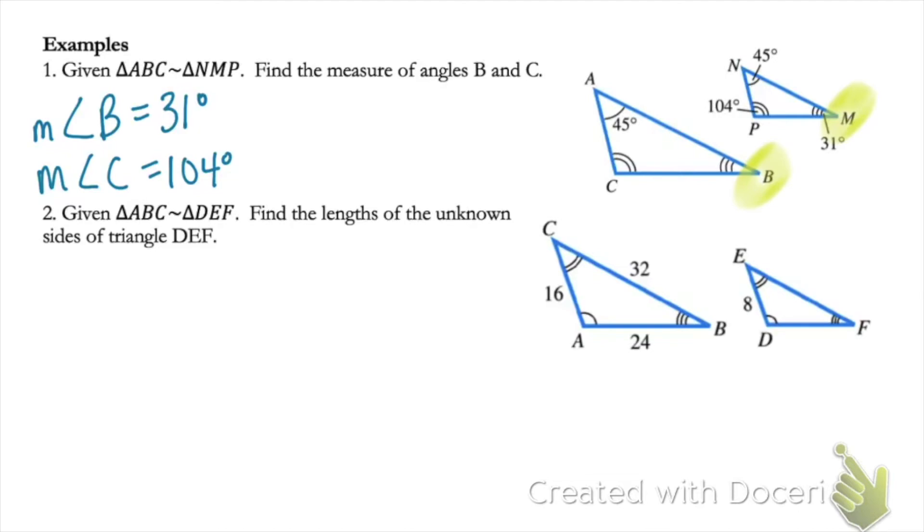Problem two. Given the two triangles are similar, find the lengths of the unknown sides. So DEF has two unknown sides.